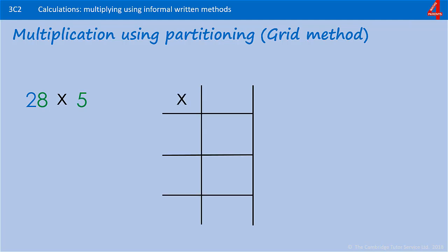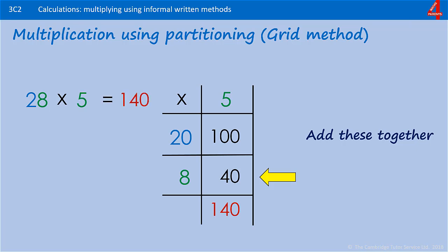First of all, draw the grid. Put a little multiplication sign in the corner there. And beneath that we're going to partition 28 into its separate tens and ones, so we have 20 and 8. And each of those is going to be multiplied by 5, so we put that in the top. In the first blank square, we need to work out 20 times by 5. And if you remember that 2 times 5 is 10, 20 times 5 will be 10 times more than 2 times 5, so that will be 100. And that goes in the square beside the 20 and beneath the 5. Now we're going to fill in the square beside the 8 and beneath the 5. 8 multiplied by 5, that's 40. We add those totals together. 100 add 40, that's 140. 28 multiplied by 5 is 140.